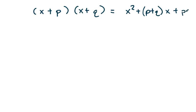So let's think about this from a sort of abstract sense. If I give you x plus p times x plus q, we know that this is going to equal to x squared plus p plus q, x plus pq.